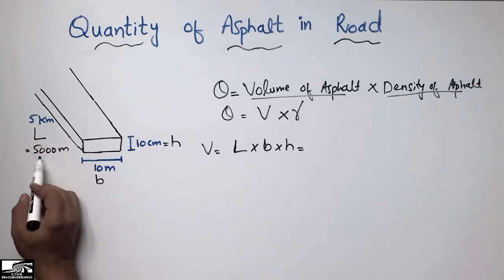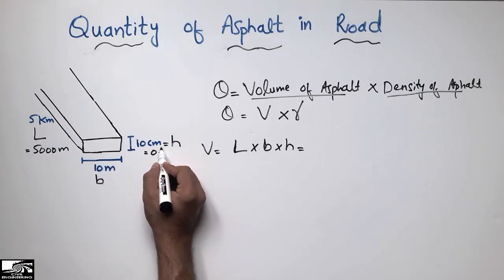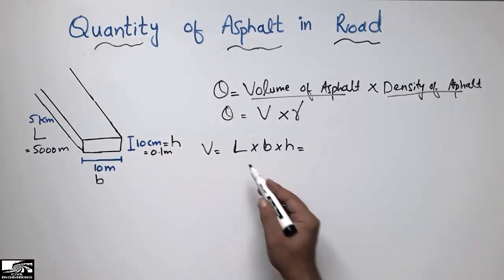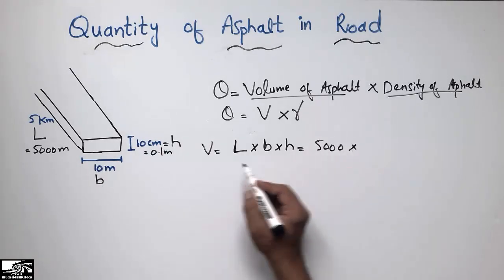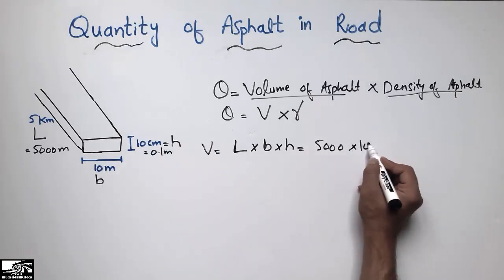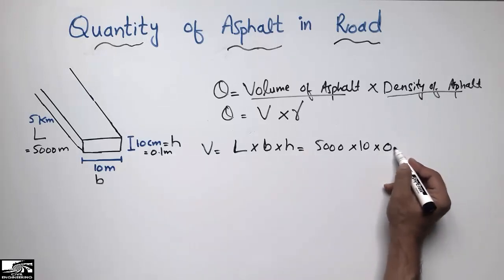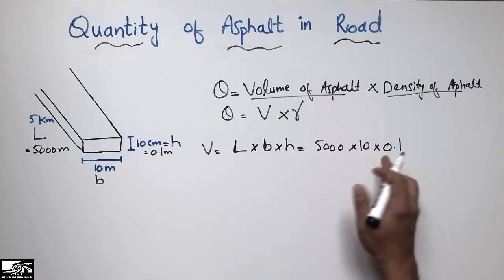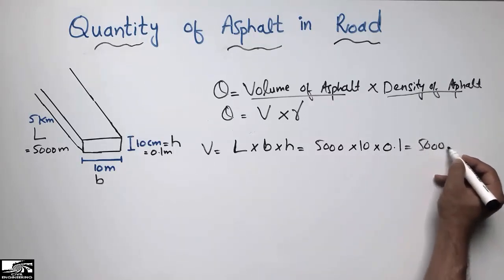5 kilometers equals 5000 meters, and 10 centimeters equals 0.1 meters. The width is 10 meters. So the volume is 5000 m × 10 m × 0.1 m, which gives us 5000 cubic meters.